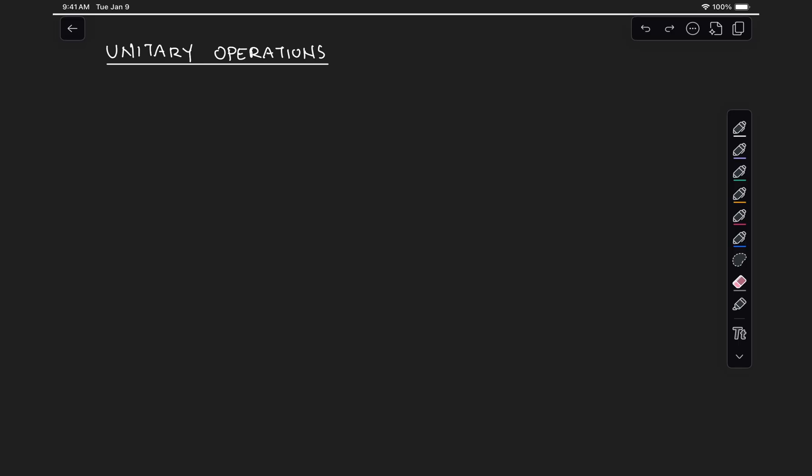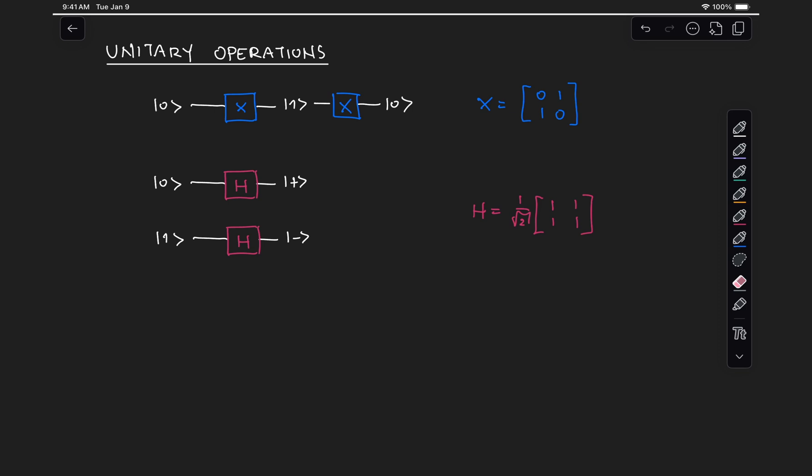The only single qubit operations we've seen so far have been the X gate, which flips our qubit from 0 to 1 and back, and the Hadamard gate, which takes qubit 0 to state plus and qubit 1 to state minus, and vice versa. These two gates are examples of what are known as unitary operations.